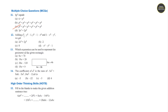Question 12: Adding x square minus y square minus 1 and y square minus 1 minus x square. x square minus x square cancels to 0; minus y square plus y square cancels to 0. Remaining is minus x square minus y square. Answer is option d.